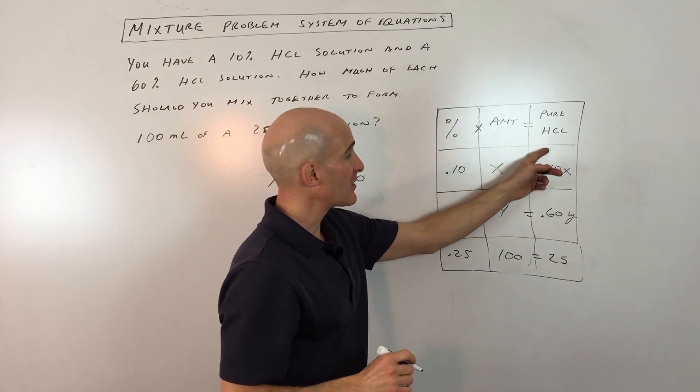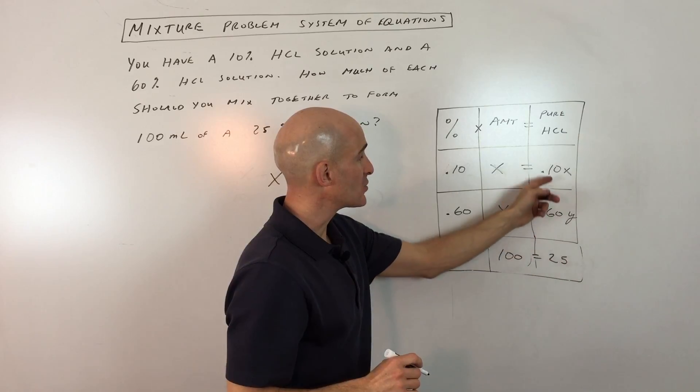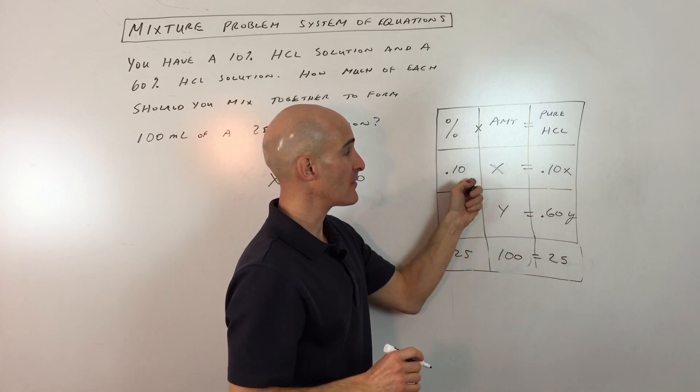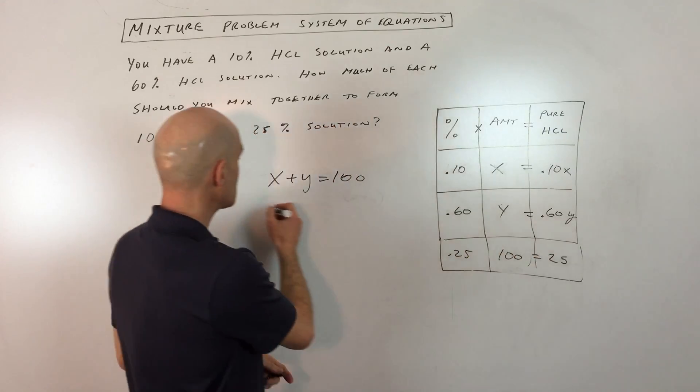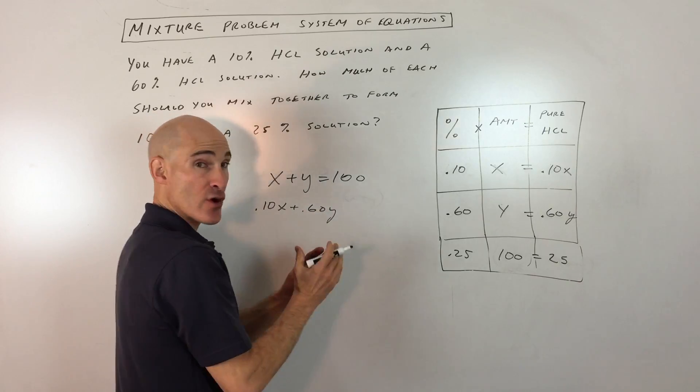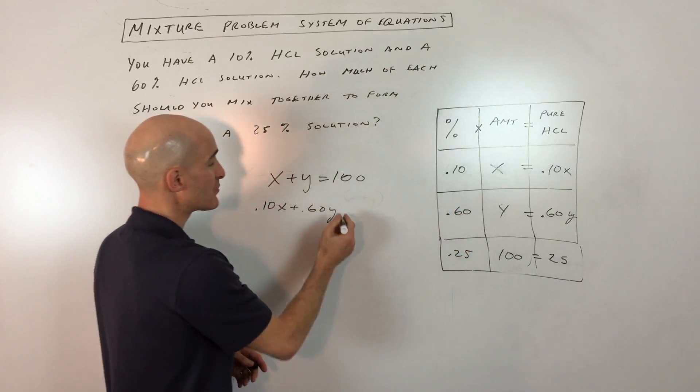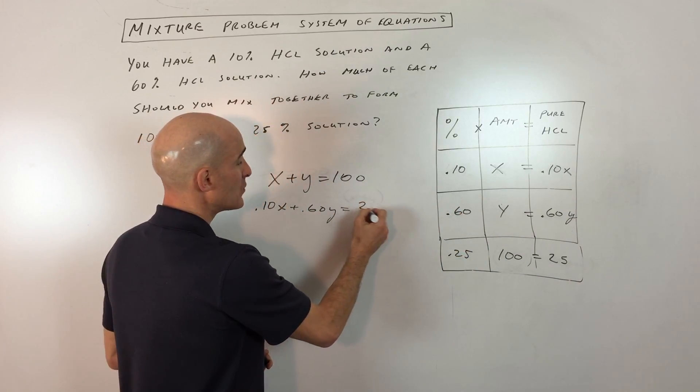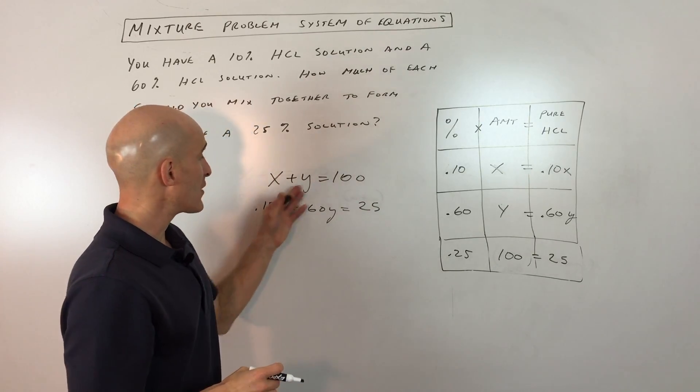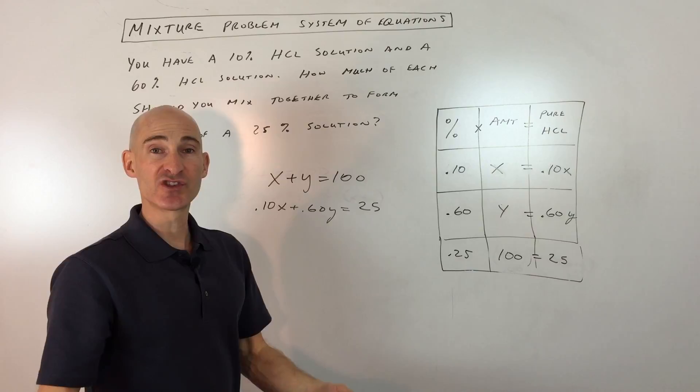Now, here we're looking at the amount of pure hydrochloric acid. So we have 0.10X pure hydrochloric acid from the 10% solution plus 0.60 times Y. That's pure hydrochloric acid that's coming from the 60% solution. And we want that to equal 25 milliliters of pure hydrochloric acid. So now we've got our two equations. We've got our system. We can solve it.